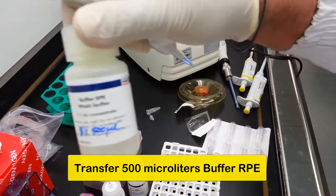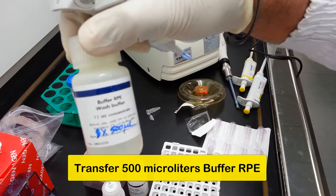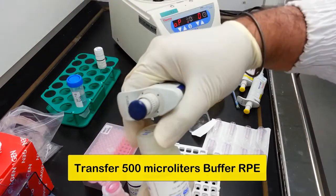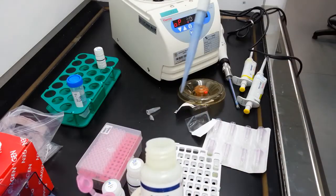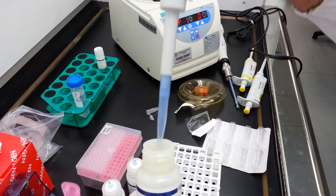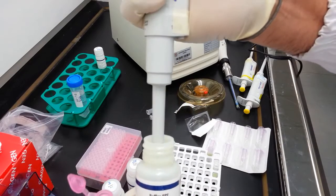The next buffer which we use is buffer RPE. This is a wash buffer which contains ethanol. So it's 500 microliters of wash buffer RPE.